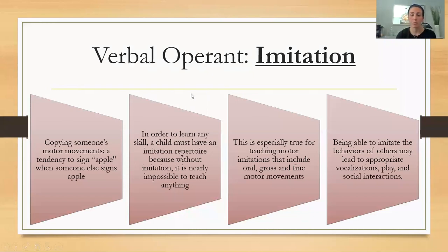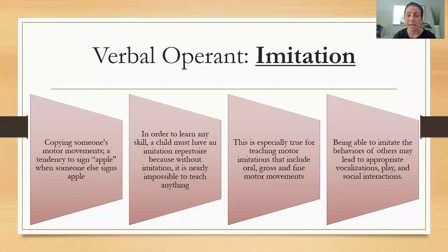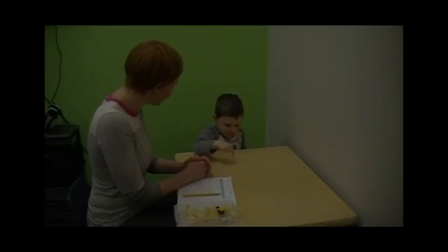The next verbal operant is imitation — this is not vocal imitation, this is physical imitation. You're physically imitating someone else's behavior, copying their motor movements — for example, the tendency to sign 'apple' when someone else signs 'apple.' In order to learn any skill, a child must have an imitation repertoire, because without imitation it is nearly impossible to teach anything. This is especially true for teaching motor imitations including oral, gross, and fine motor movements. Being able to imitate the behaviors of others may lead to appropriate vocalizations, play, and social interactions.